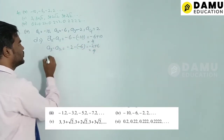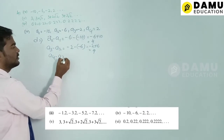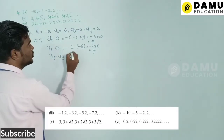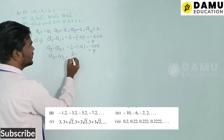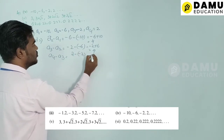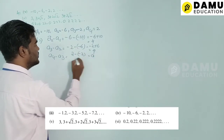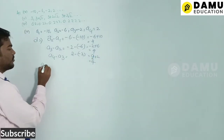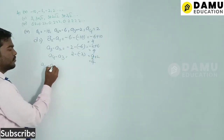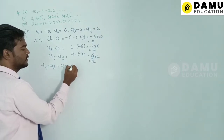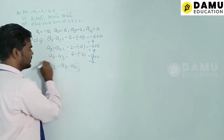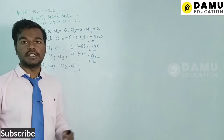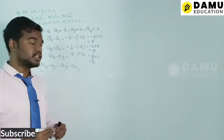And a4 − a3 = 2 − (−2) = 2 + 2 = 4. The common difference is the same, so the given series is in arithmetic progression.